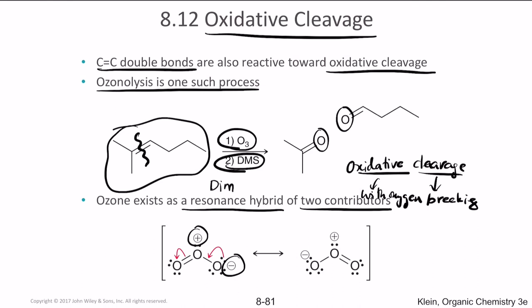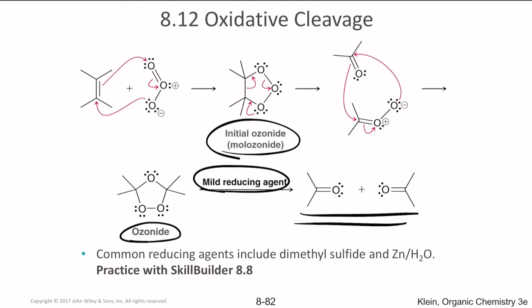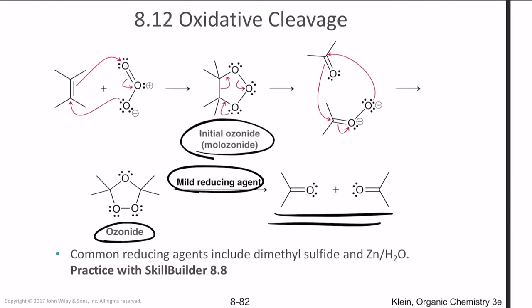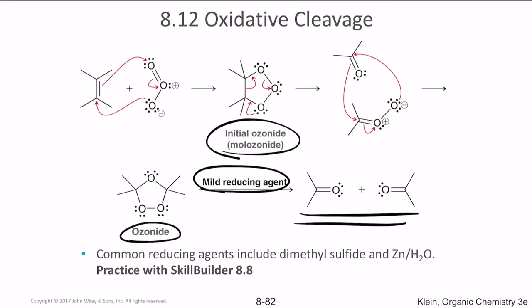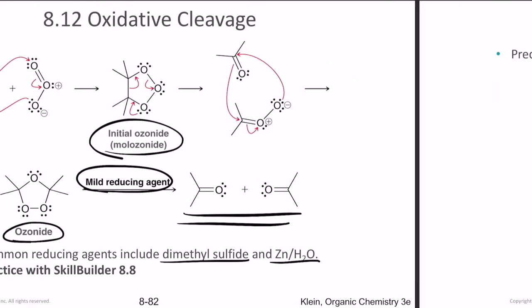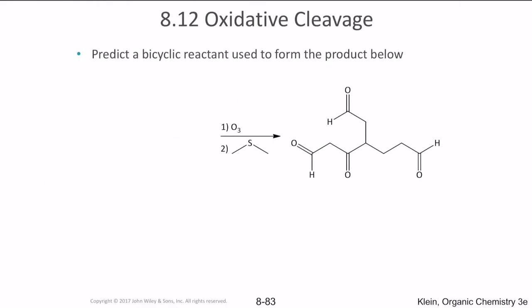The common reducing agents used in ozonolysis include dimethyl sulfide (DMS) and zinc with H2O.